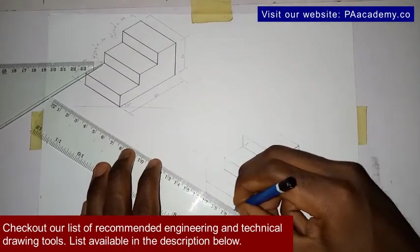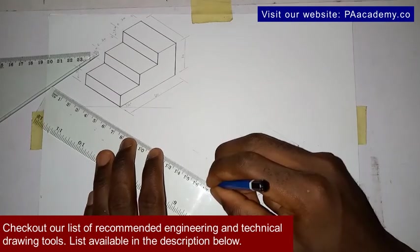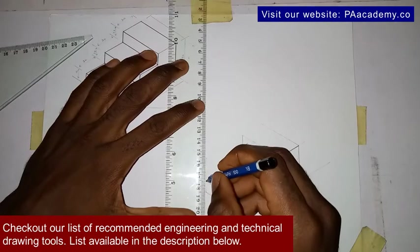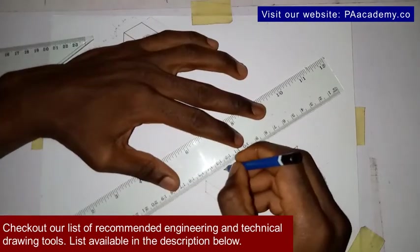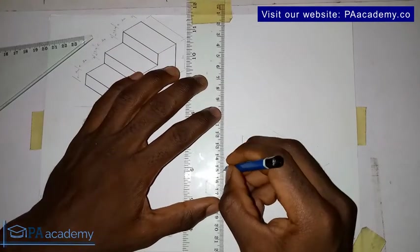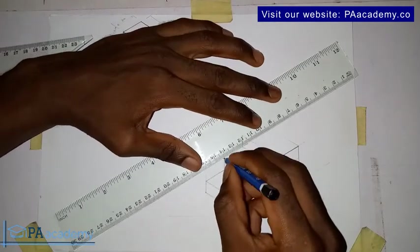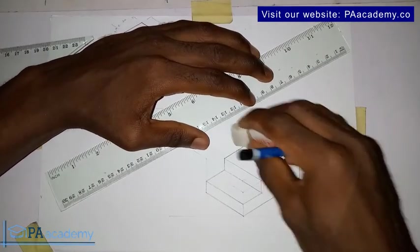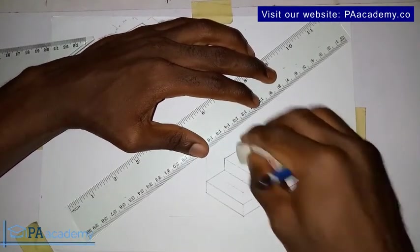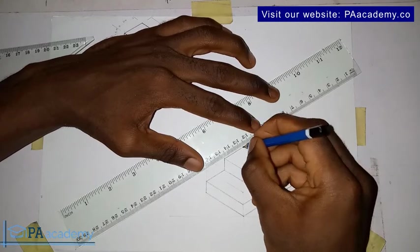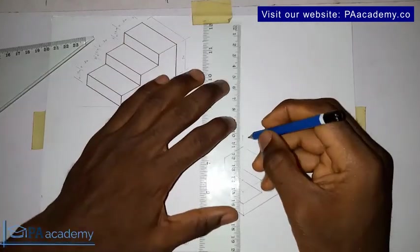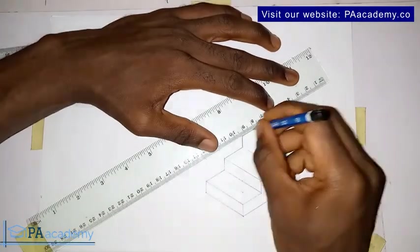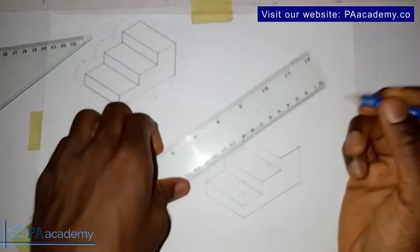Now let's do the front. That's why I said earlier you should always start with a faint line so that whenever there's a mistake you can easily rub it off and then you do the right thing. All right, let's join it to the top.